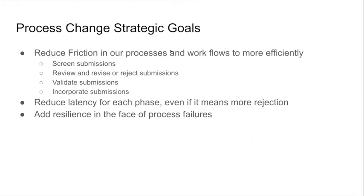Even if reducing latency means rejecting more things, if we can have low latency to rejection or to feedback to make it better, we can get better submissions while people are still interested in the problem. If I see a patch from four years ago, sending it back with requests for changes will probably get crickets or an angry email about how I ignored them for so long. Finally, we need to look at adding resilience in the face of process failures — what do we do when something doesn't get a review or looks like it should go in but hasn't? How do we unblock the system?